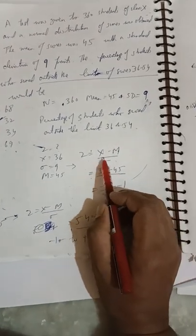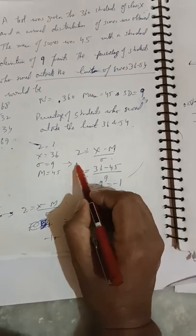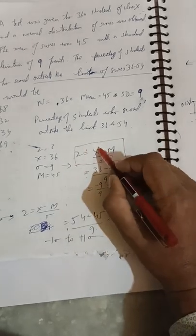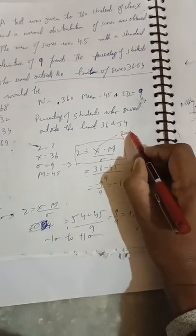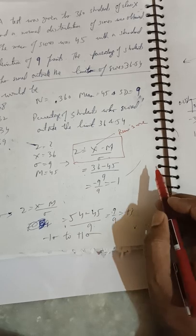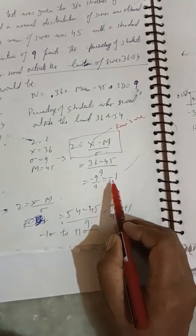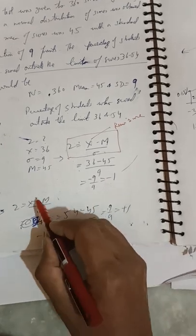In this case, for the first raw score, x = 36. So z = (36 - 45) / 9 = -9/9 = -1. Second case: z = (x - m) / sigma. The raw score given is 36, so 36 - 45 divided by 9 equals -1.